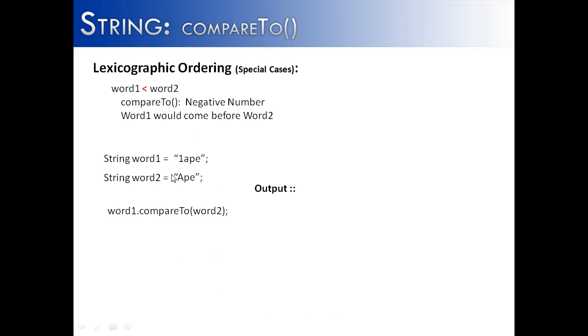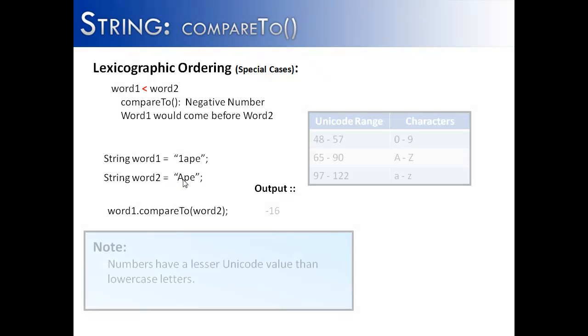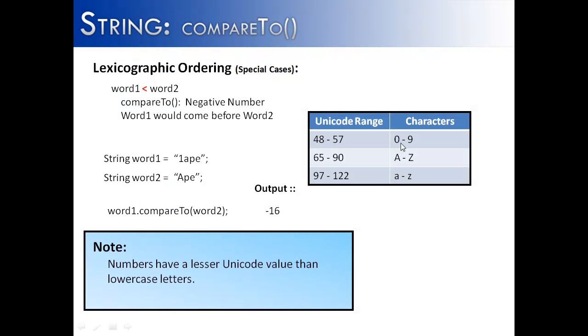Next we have numbers. Where do numbers compare with letters? Well, let's see. Numbers 0 through 9, which is all the numbers in a base 10 numbering system, are 48 through 57 in the Unicode range. And this puts them before uppercase letters and before lowercase letters. And you can see also 57, 65, there's a whole bunch of symbols in between 57 and 65. But for now, what's important to understand is that if you have a number, it's going to come before any letter.